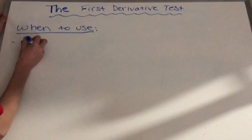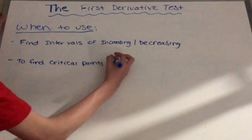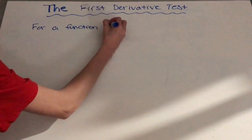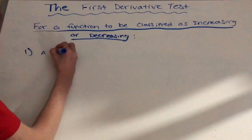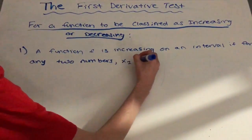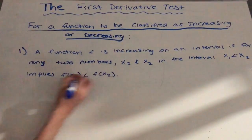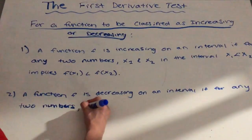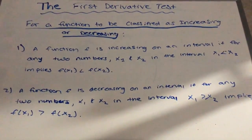You use the first derivative test if you want to find when the function is increasing or decreasing. Also, you want to use the first derivative test if you want to find the critical points of the function. For a function to be either increasing or decreasing, it must follow these rules. A function f is increasing on an interval for any two numbers x₁ and x₂ in the interval where x₁ is greater than x₂ implies f(x₁) is less than f(x₂). A function f is decreasing on an interval for any two numbers x₁ and x₂ in the interval where x₁ is greater than x₂ implies f(x₁) is greater than f(x₂).